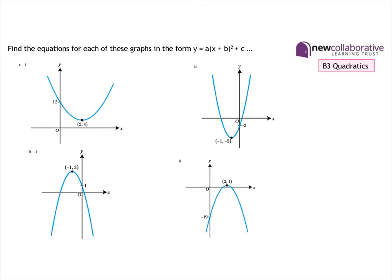Here are some questions for you to try. There are four graphs, and for each graph you are given the vertex and the y-intercept. You need to find the equations of these graphs in completed square form. Have a go at these — pause the video at this point — and then once you've had a go, continue with the video for an explanation of each one.